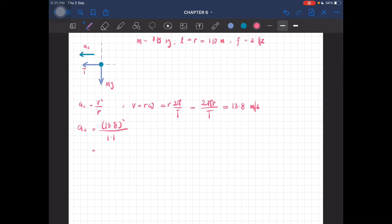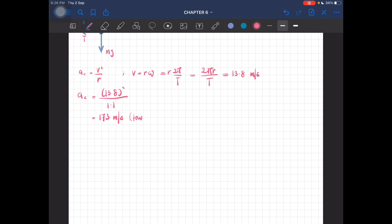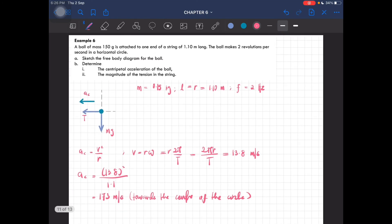For this one, make sure you don't round this off to 14. Make sure you have three significant figures or at least two decimal places. Part two—don't forget to write 'towards the center of the circle.'